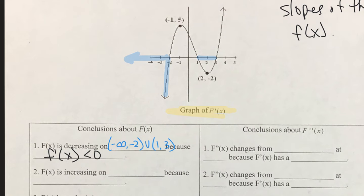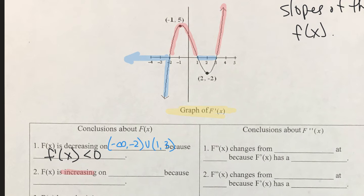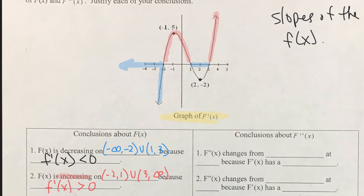So we have two intervals of decreasing. When your derivative is negative, your function is decreasing. When your derivative is positive — above the x-axis — that's when the function is increasing. We write down those two intervals for when your function is increasing and your derivative is positive.